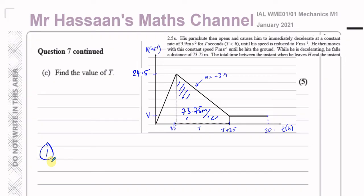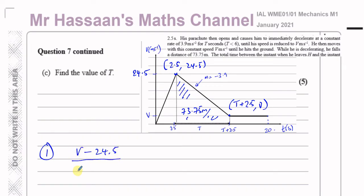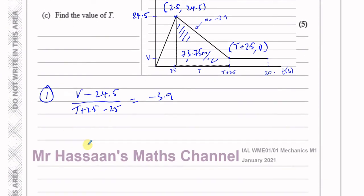Looking at the gradient of the line: change in Y over change in X. Using coordinates (2.5, 24.5) and (T plus 2.5, V), the gradient gives us: V minus 24.5 divided by T equals minus 3.9. This becomes V minus 24.5 equals minus 3.9T, so V equals 24.5 minus 3.9T. That's equation one. The second equation comes from the area of the trapezium: T divided by 2 times (24.5 plus V) equals 73.75.